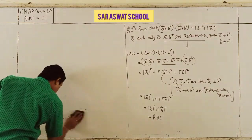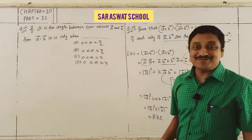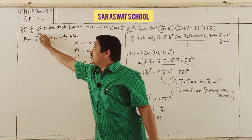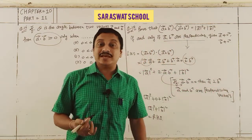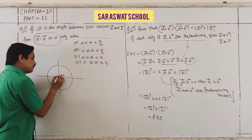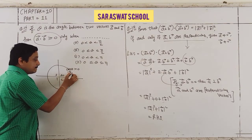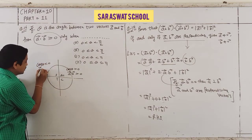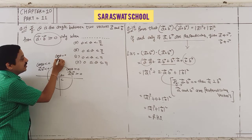Question 16 is an MCQ. If θ is the angle between two vectors and A·B ≥ 0, then in the first quadrant cos θ is positive so A·B > 0; in the second quadrant cos θ is negative so A·B < 0; and if cos θ = 0, then A·B = 0 (perpendicular).